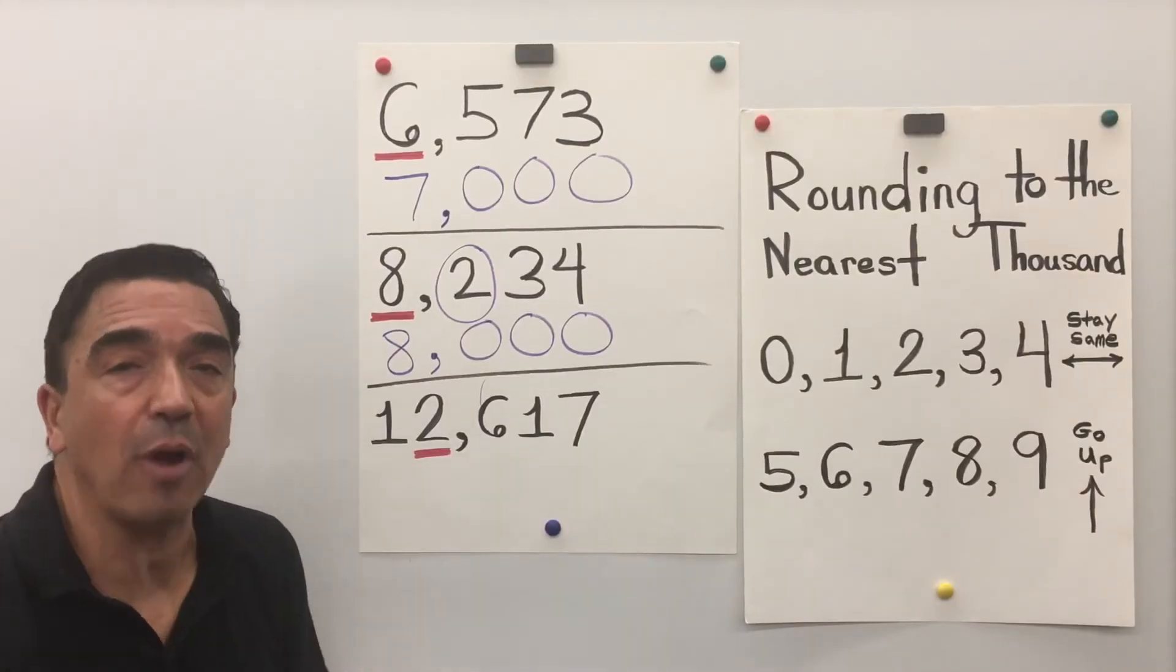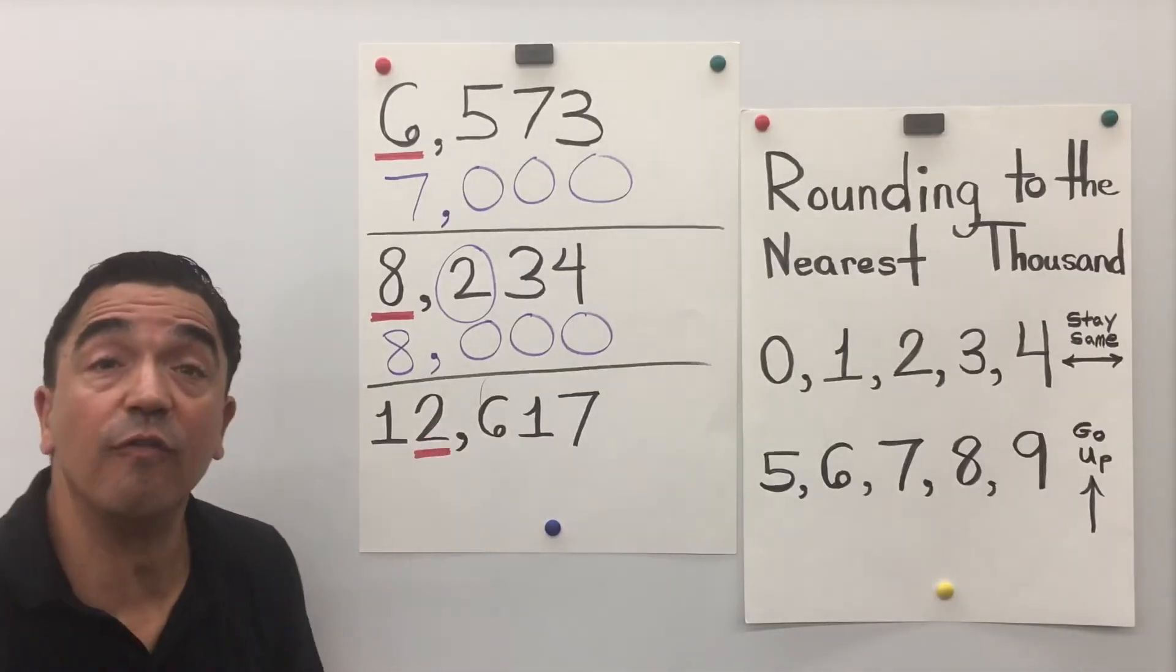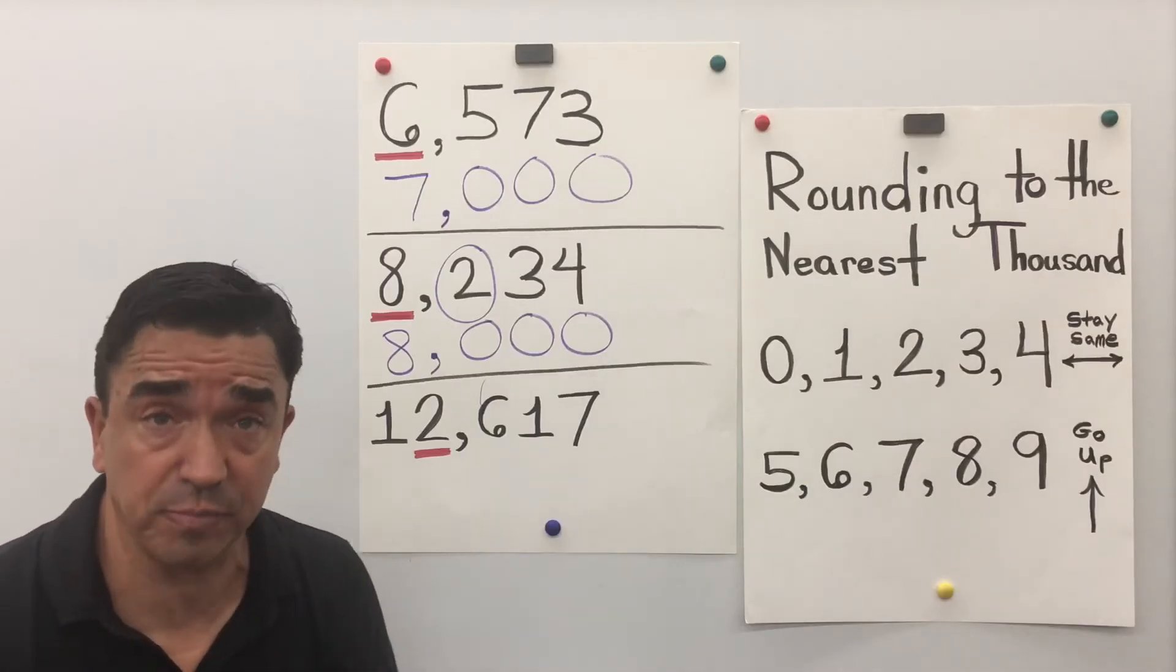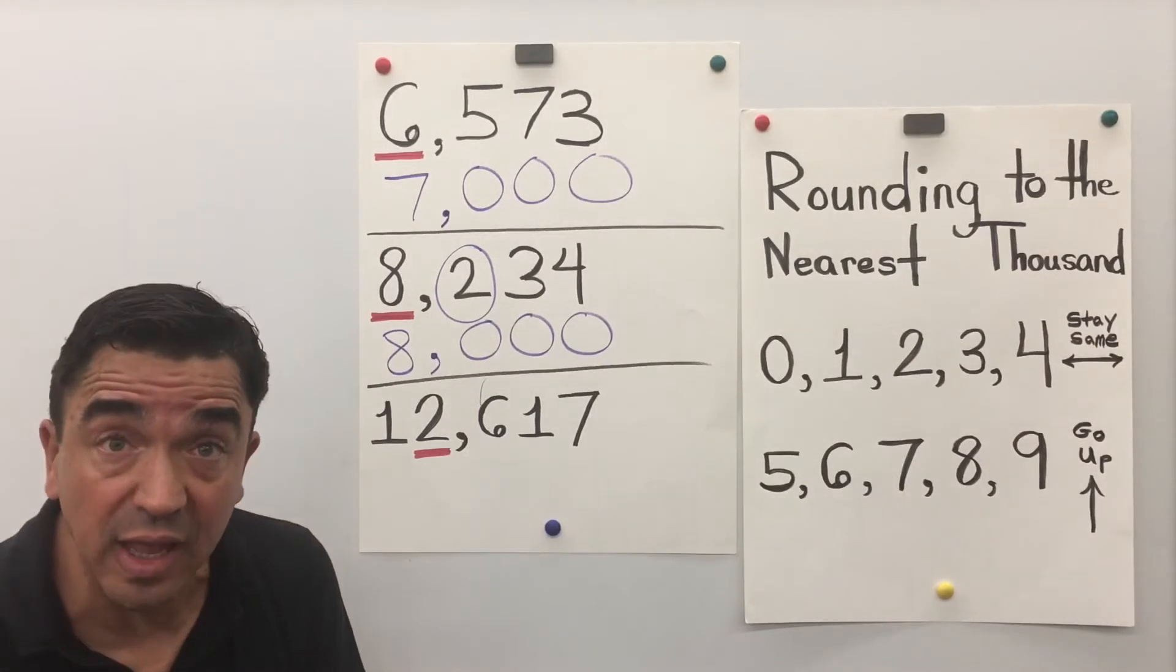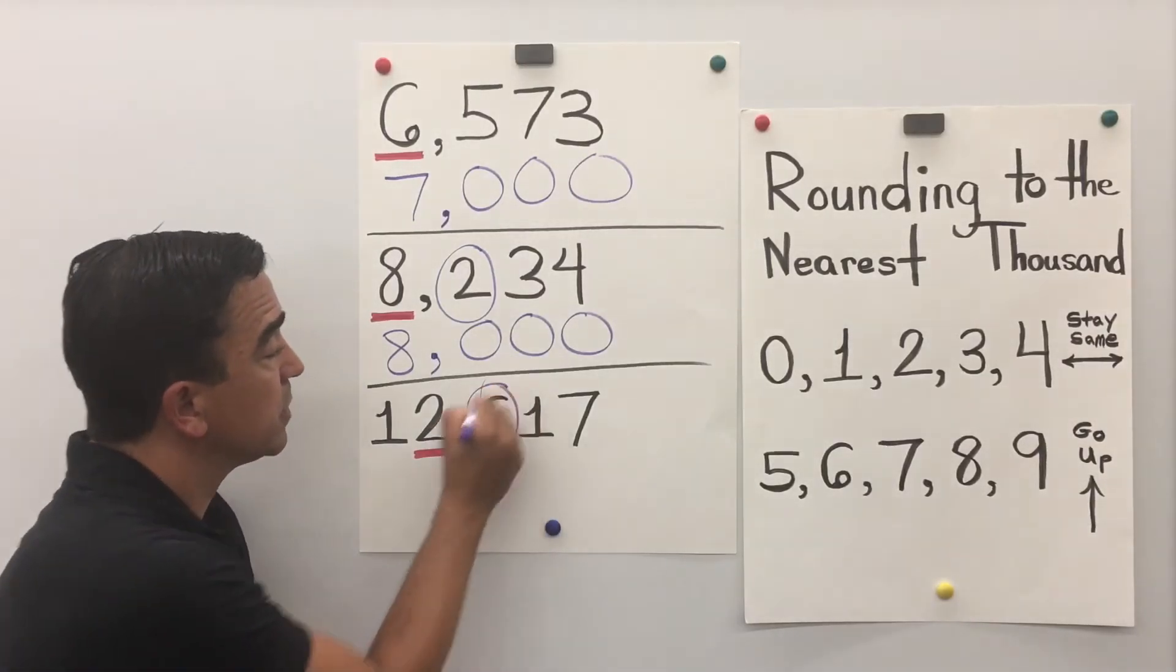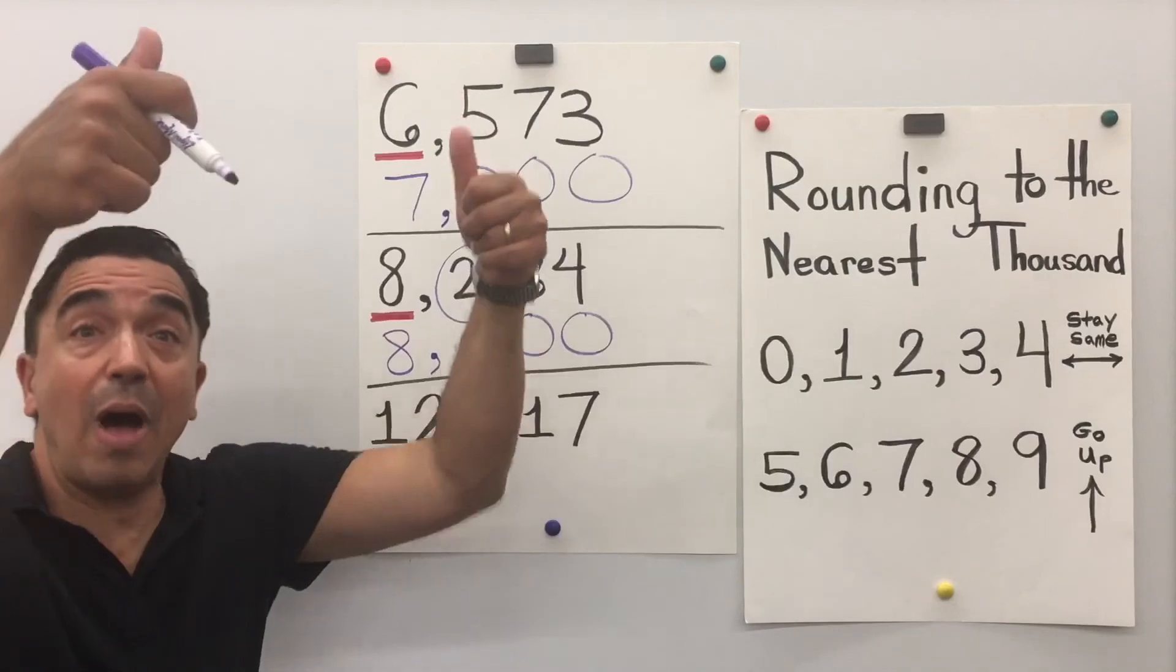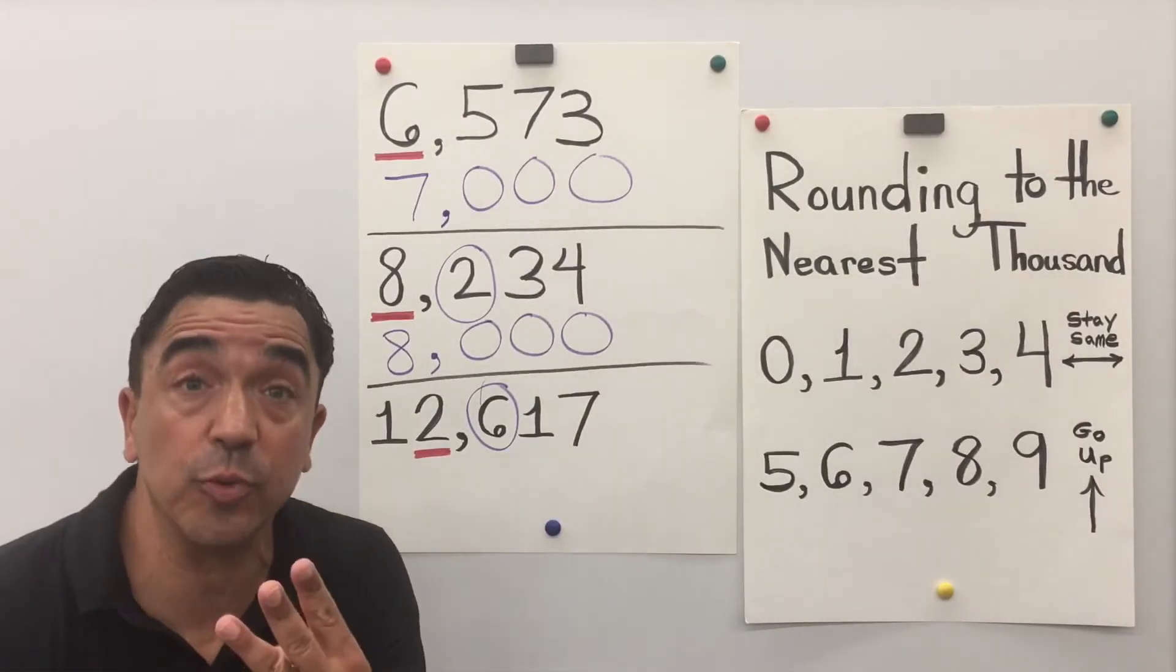Let's look at our last problem. The number is 12,617. The 2 is in the thousands place. So, the 6 in the hundreds place is going to tell the 2 what to do. The 6 is going to tell the 2 to go up. So, the 2 is going to become a 3.